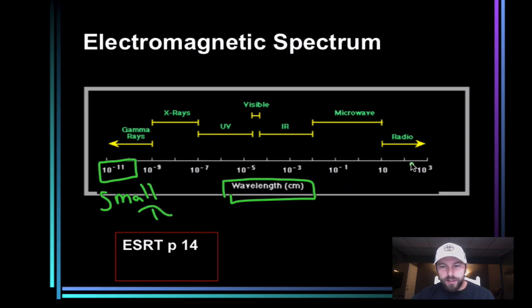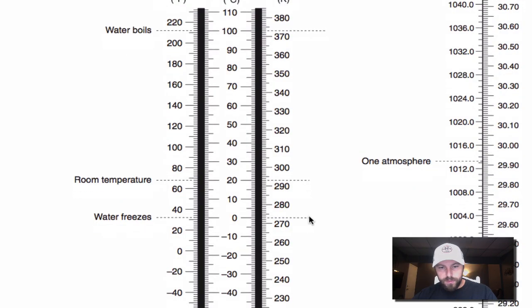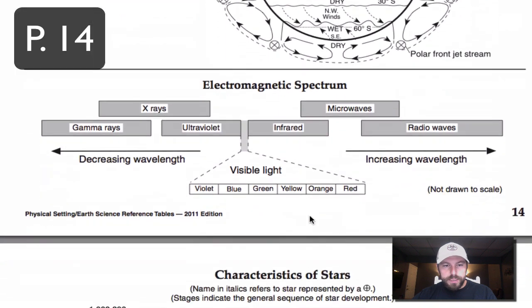Versus over here, 10 to the third for radio waves. So that's large or long wavelength right here. If we go to our reference table, page 14, next page, we can see here our electromagnetic spectrum.